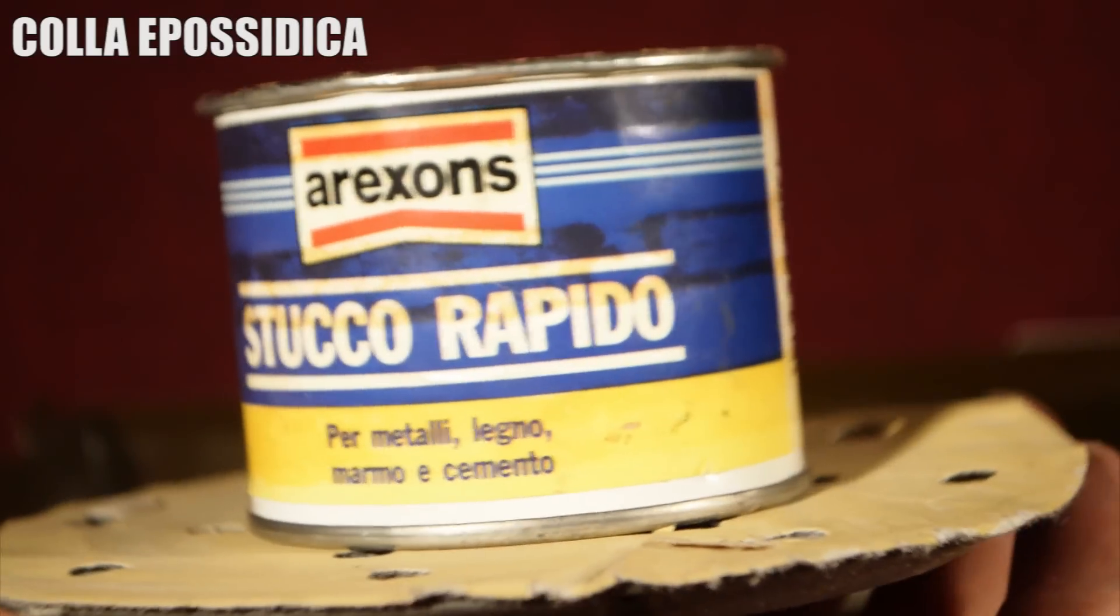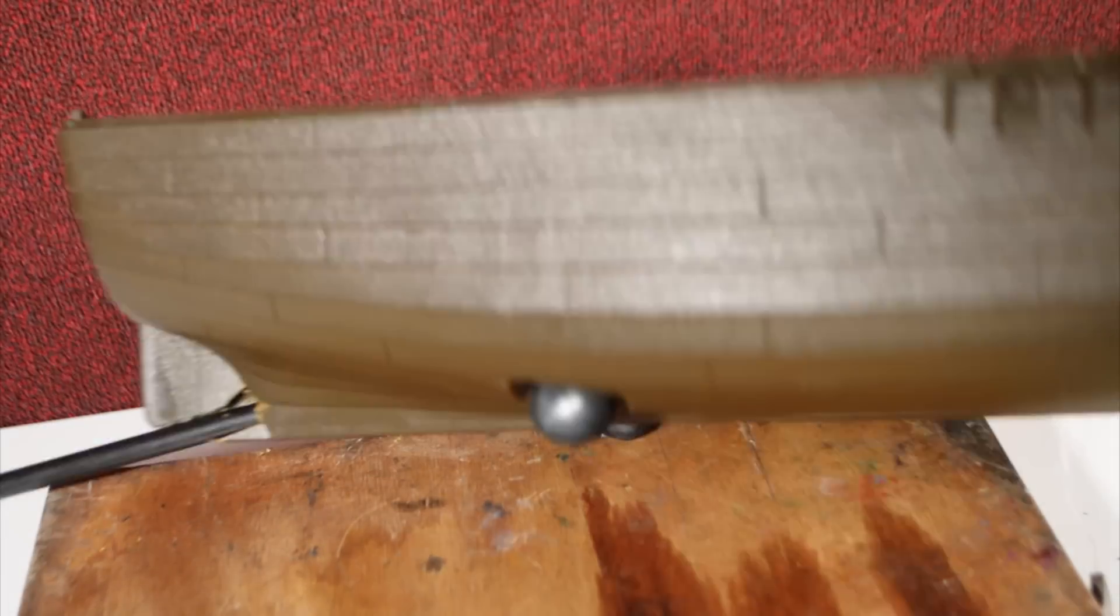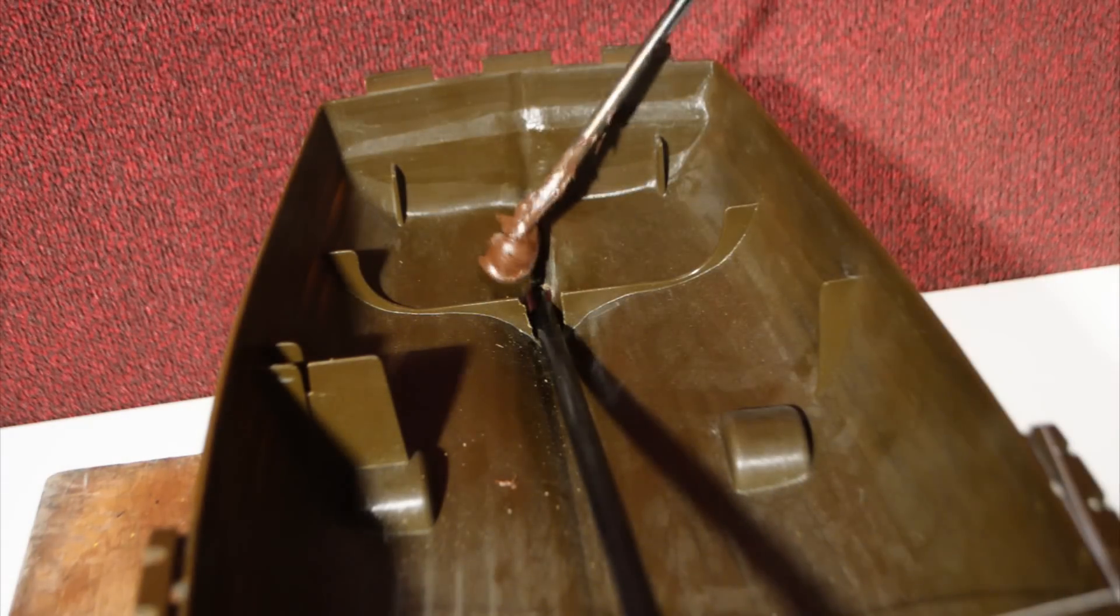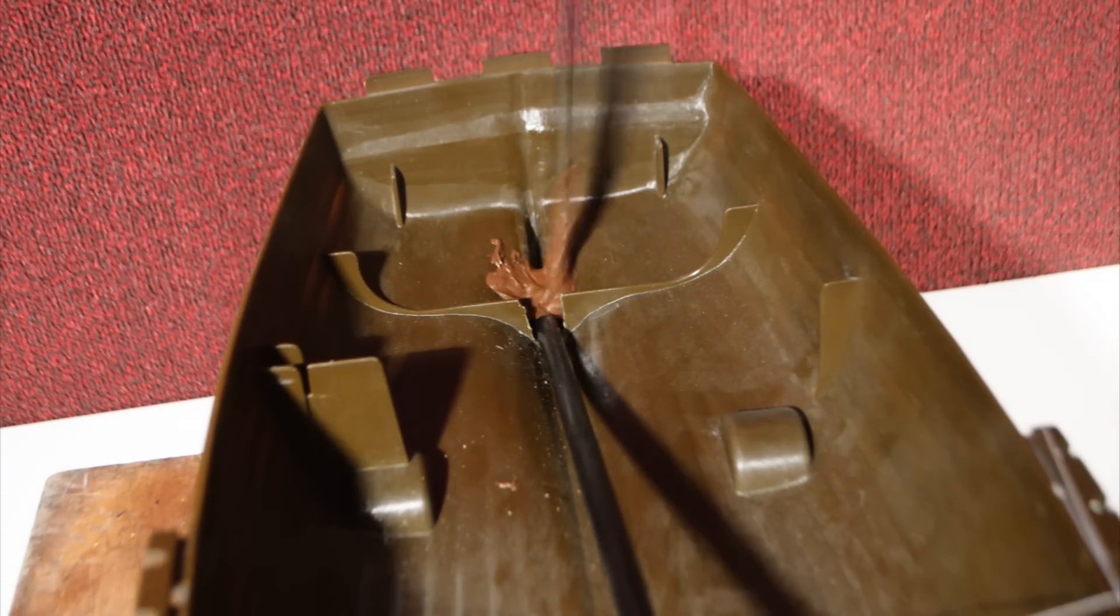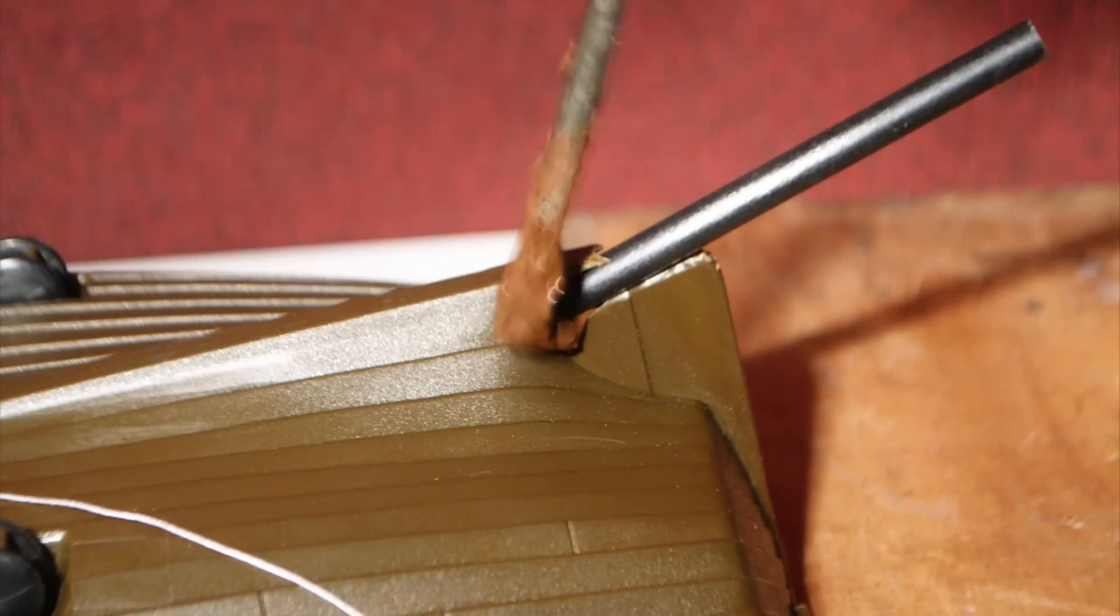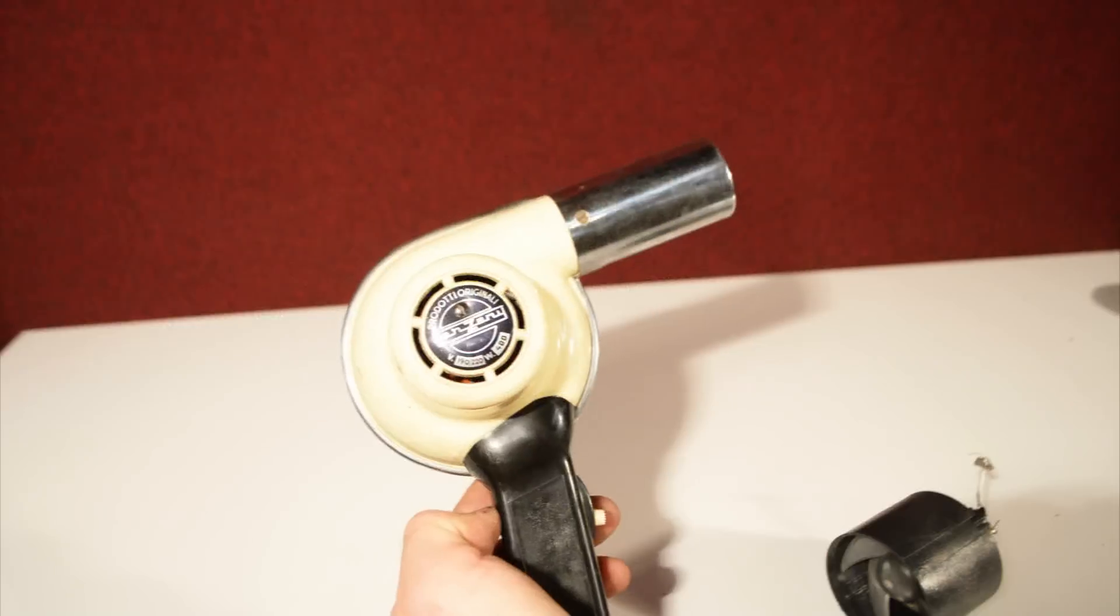Now I just have to fix everything in place using some epoxy glue. The glue makes sure that water cannot go inside the boat and it doesn't sink. The water can go inside the straw but it stops at the floating level of the boat. I do the same thing also on the outside of the boat and after I smooth everything using some sandpaper.